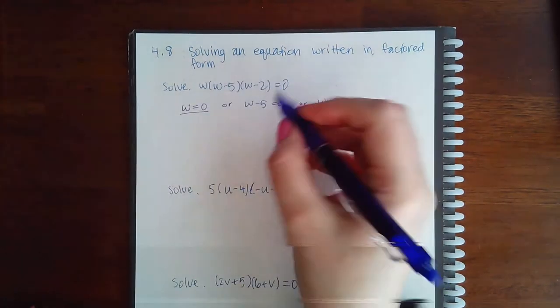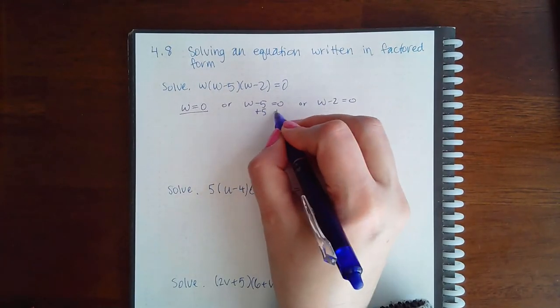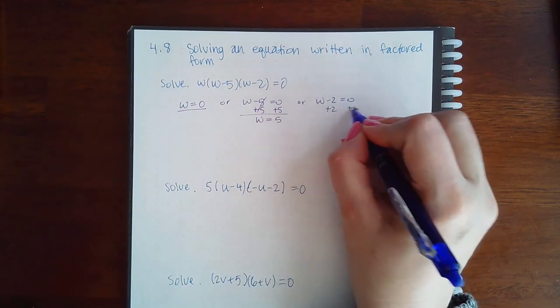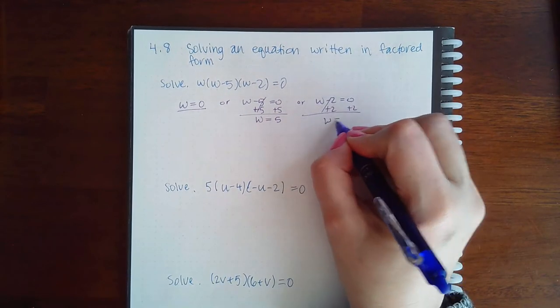This one's already solved for. Here if I add 5 to both sides, I get that w equals 5. And here if I add 2 to both sides, I get that w equals 2.